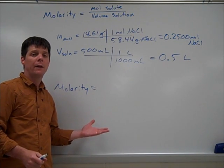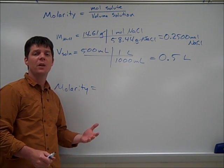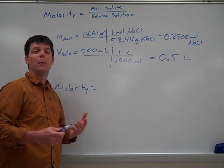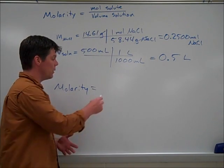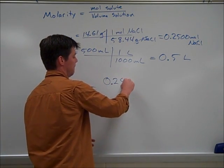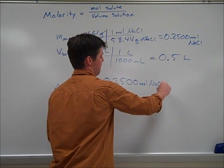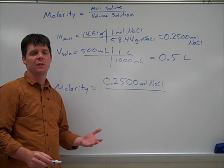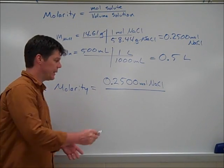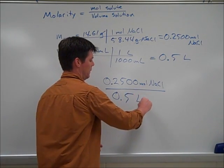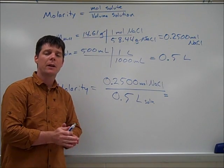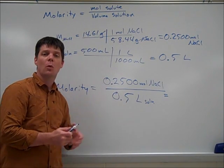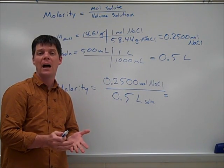To calculate the molarity, we take the moles of solute, sodium chloride, which is 0.2500 moles, and divide by the total volume of the solution, 0.5 liters. This gives us a molarity of 0.5.